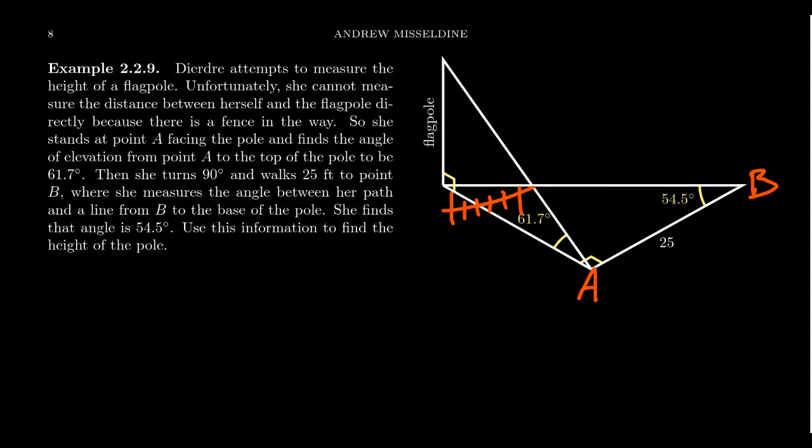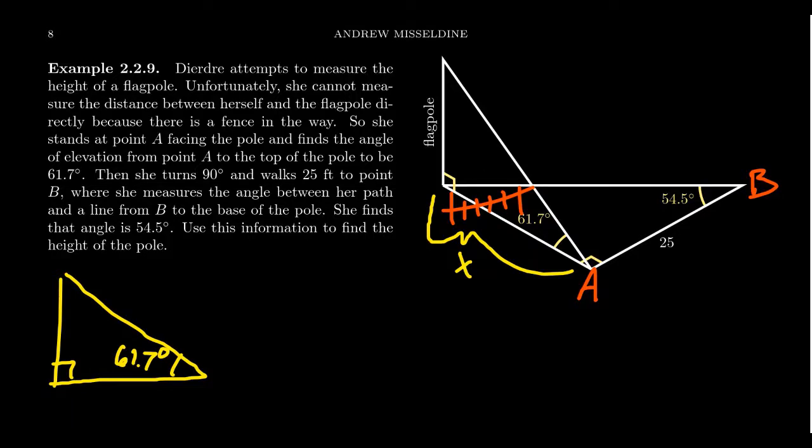Well, why is the fence such a big deal here? If we call the distance from the flagpole to Deirdre's original measurement X, this gives us a right triangle where the angle is given as 61.7 degrees. The distance at the bottom at A is X, and let's say the height of the flagpole is equal to H.